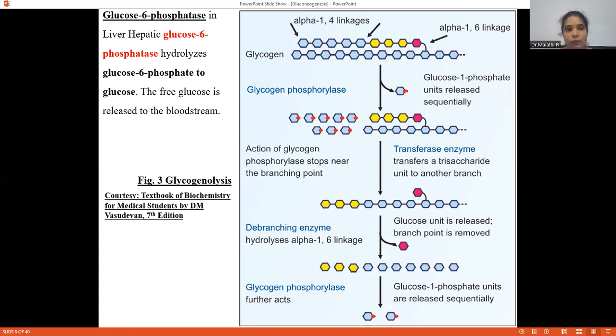The phosphoglucomutase enzyme converts glucose-1-phosphate to glucose-6-phosphate. Now glucose-6-phosphate can enter into the glycolytic pathway if it is in tissues that need energy. The liver hepatic glucose-6-phosphatase hydrolyzes glucose-6-phosphate to glucose.